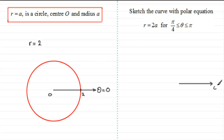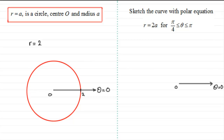To sketch this, we start by looking at r equals 2a, which would be a circle of radius 2a. So with our initial line theta equals zero radians, we've got our center — the pole — and if we draw a circle of radius 2a, we get something like this, where it cuts the initial line at 2a. This is what we would have if theta went from 0 to 2π.